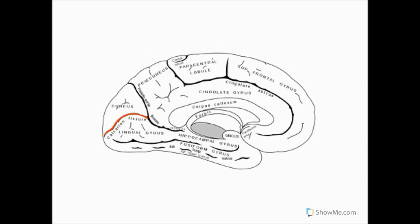Here we have a diagram of the medial aspect of the left hemisphere of the brain. We can see, highlighted in red, the calcarine sulcus. Just superior to the calcarine sulcus, we can see the cuneus, and just inferior, we can see the lingual gyrus.